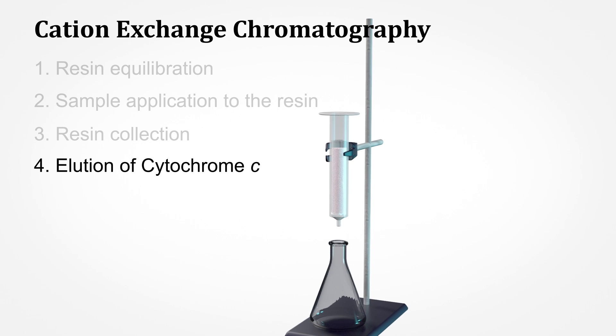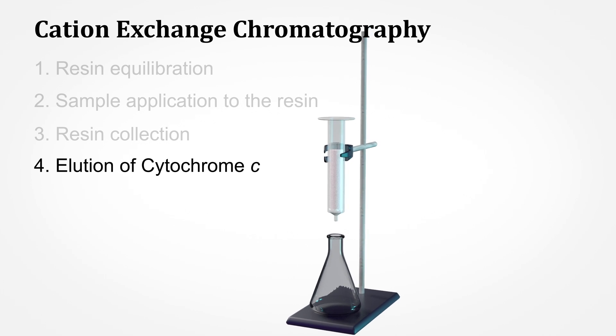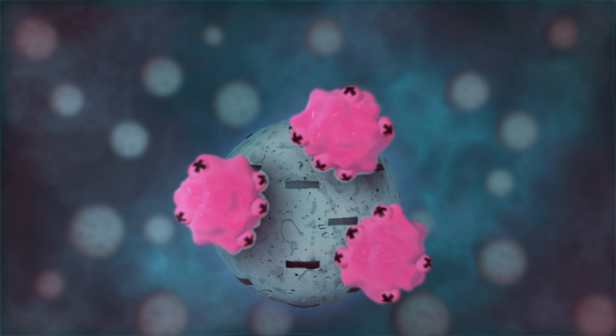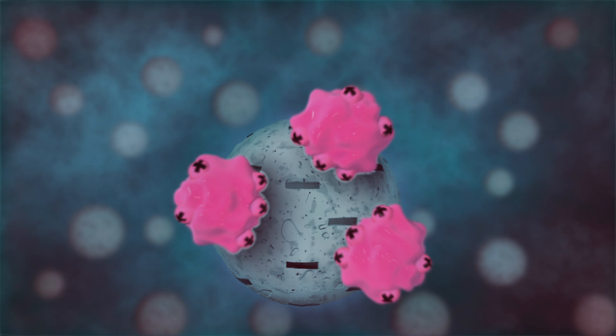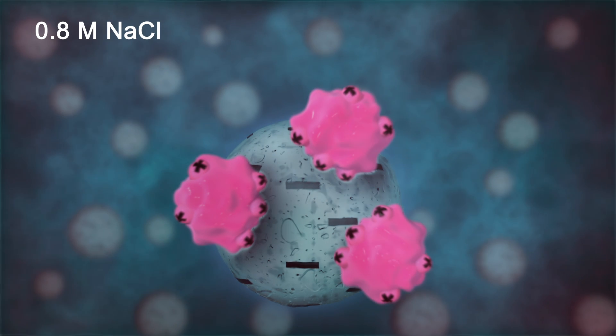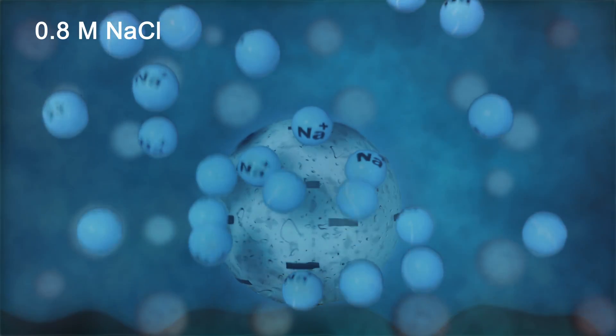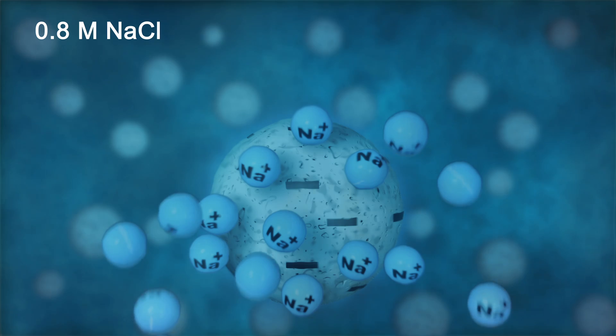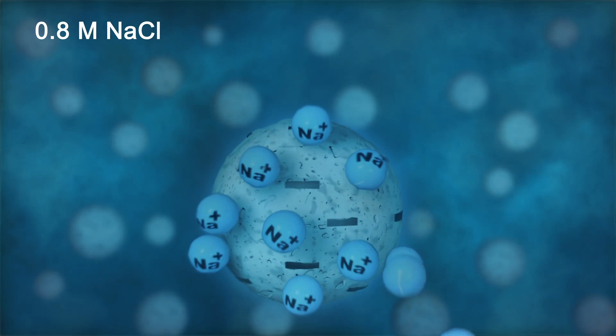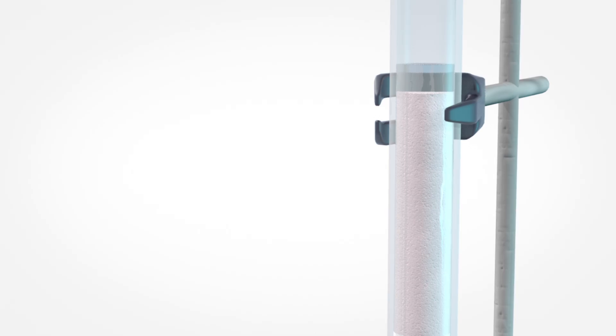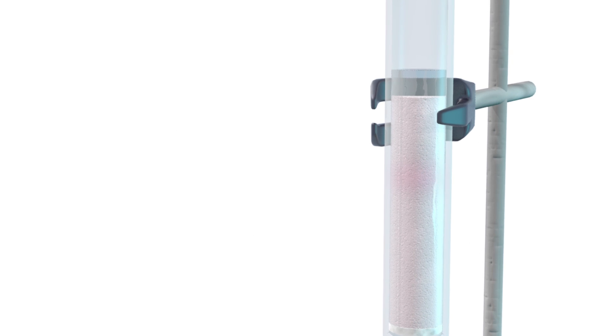Elution of cytochrome-C: To elute cytochrome-C from the column, a buffer solution with a higher concentration of sodium ions, 0.8 molar sodium chloride, is used. The increased ionic strength of the solution will result in sodium replacing cytochrome-C on the column.